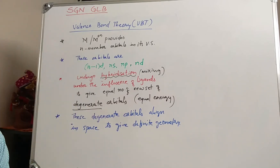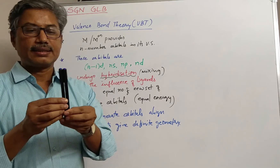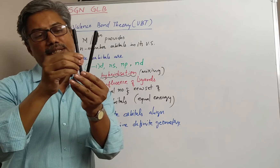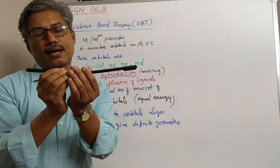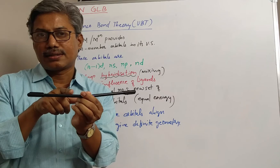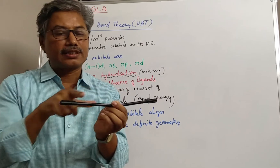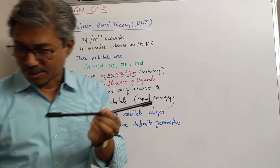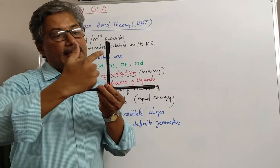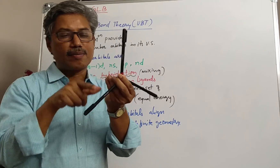For example, look at this. If two orbitals are there, they undergo repulsive interaction and repel each other until the repulsion becomes minimum. That means if two orbitals are involved in hybridization, their alignment will be 180°, which is the most stable position. If a third orbital is involved, the bond angles of 90° and 180° cause the third orbital to push the other two down so that the bond angle becomes 120°.